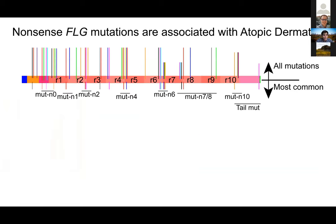This was exciting to us because there was already exciting work from the genetics field suggesting that mutations in filaggrin were strongly associated with skin barrier disorders, particularly one known as atopic dermatitis. These mutations are nonsense — i.e., truncating mutations — essentially stop codons that appear. The most common mutations are towards the middle of the protein.